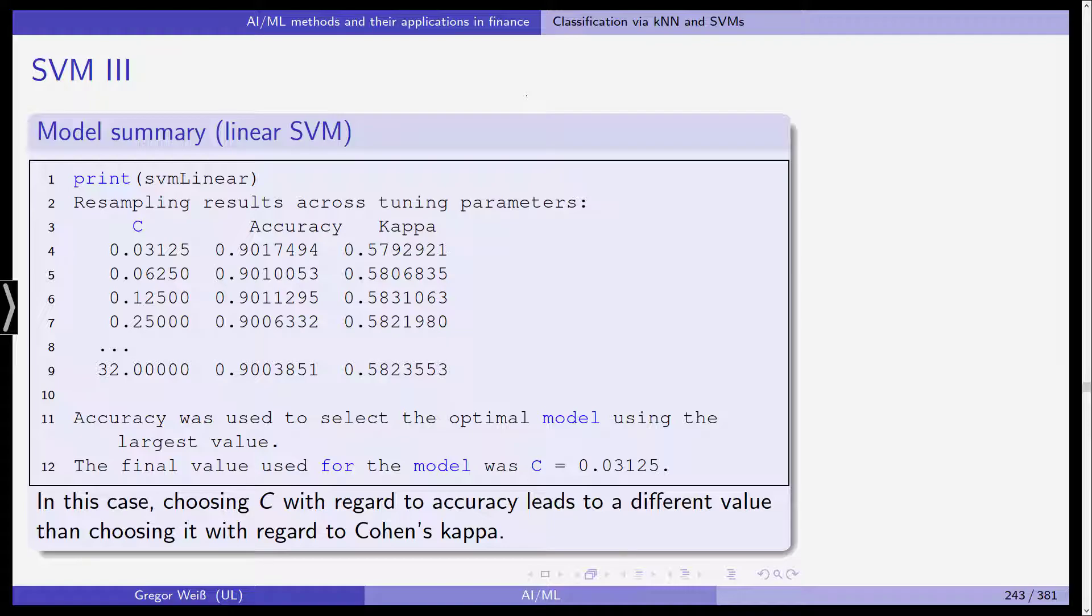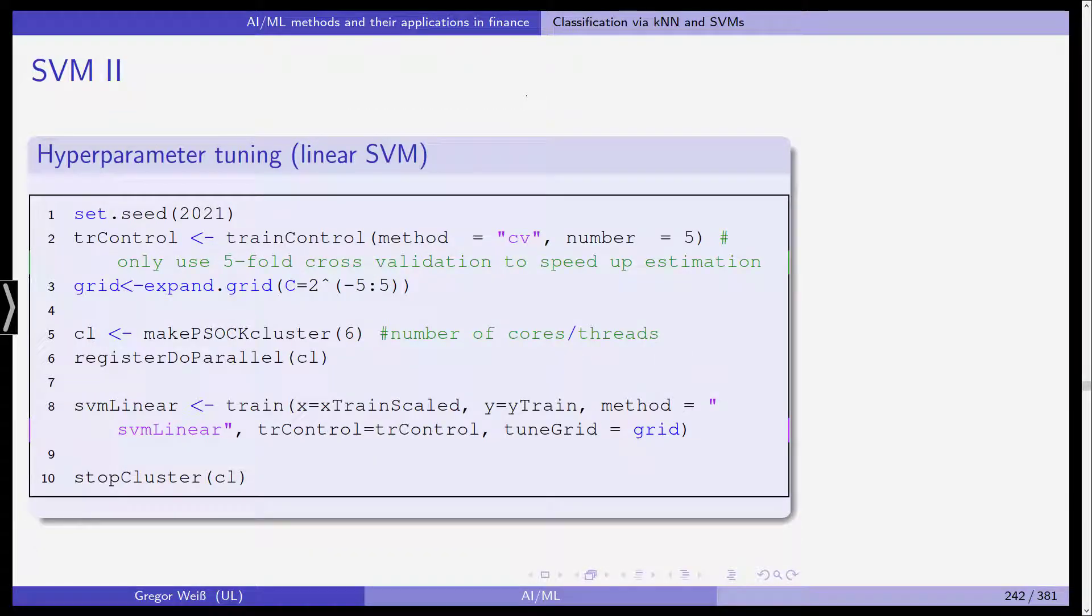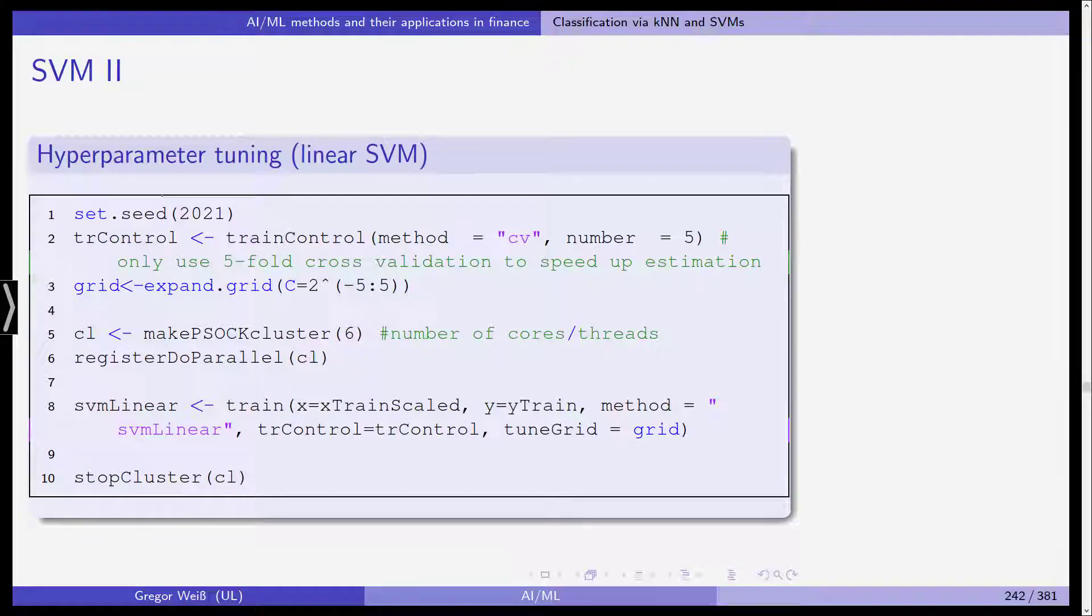So in this case, choosing C with regard to accuracy leads to a different value than choosing it with regard to Cohen's kappa. But we said that we want to use in this case the accuracy and it's the standard and default setting in the caret package.